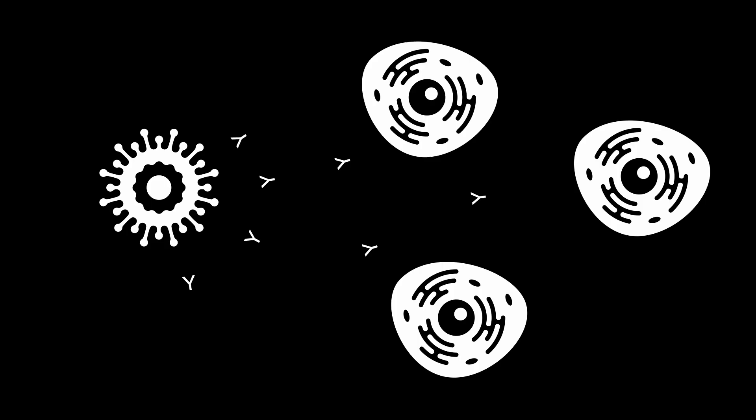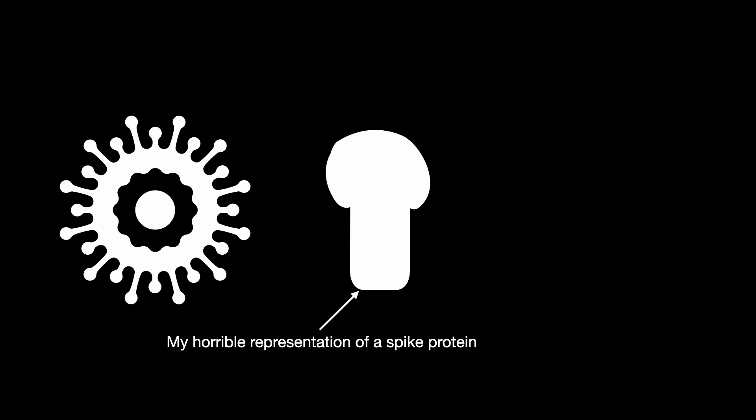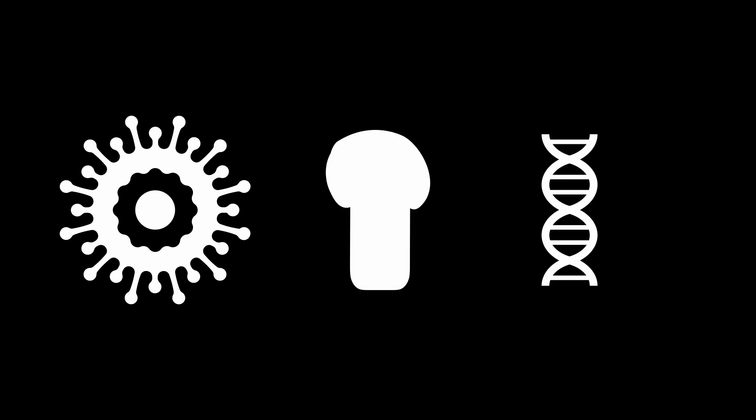Vaccines in general work by triggering an immune response artificially, which could be by injecting a weakened virus, part of the virus, or genetic information that stimulates body cells to create part of the virus.